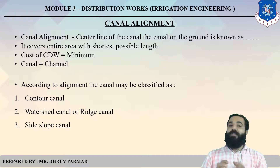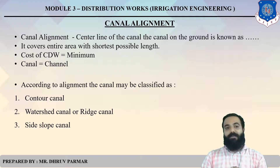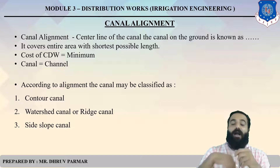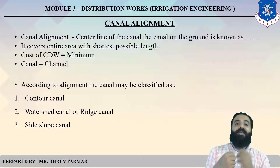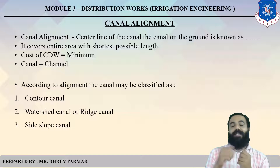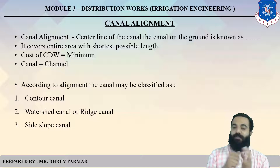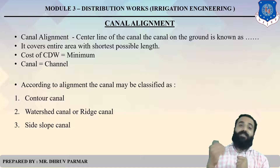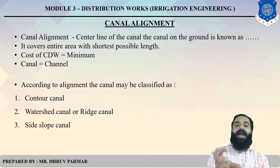The cross drainage work will be discussed in the next session. According to alignment, canals may be classified into three types: first, contour canal; second, watershed canal, also called ridge canal; and third, side slope canal.